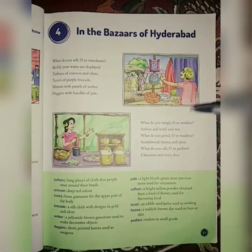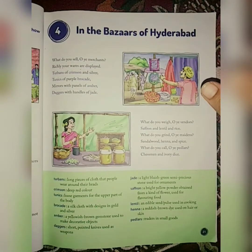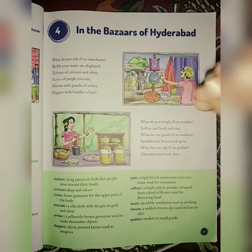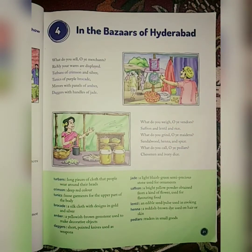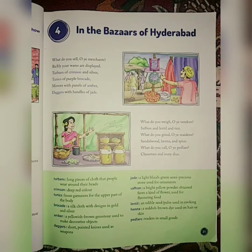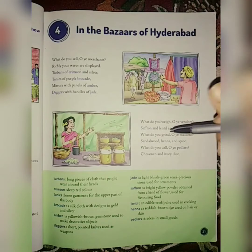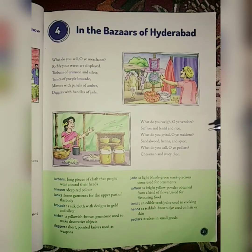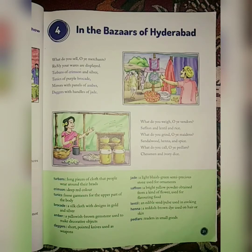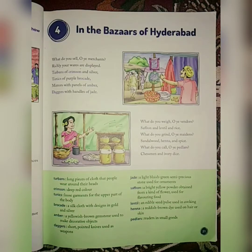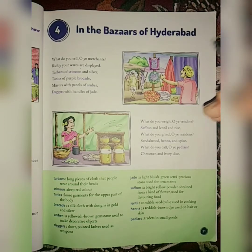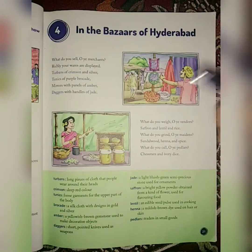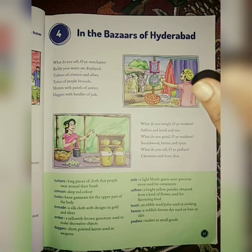The poet then visits the vendor, the maiden, and the peddler — meaning a salesman. She asks the vendor what they are weighing for sale. The vendor replies that they are weighing saffron, lentil and rice. The poet then asks the maiden girls what they are grinding; they reply sandalwood, henna and spices. The peddlers are asked what they are selling, and they say chessmen and dyes made from ivory for the game of chess.